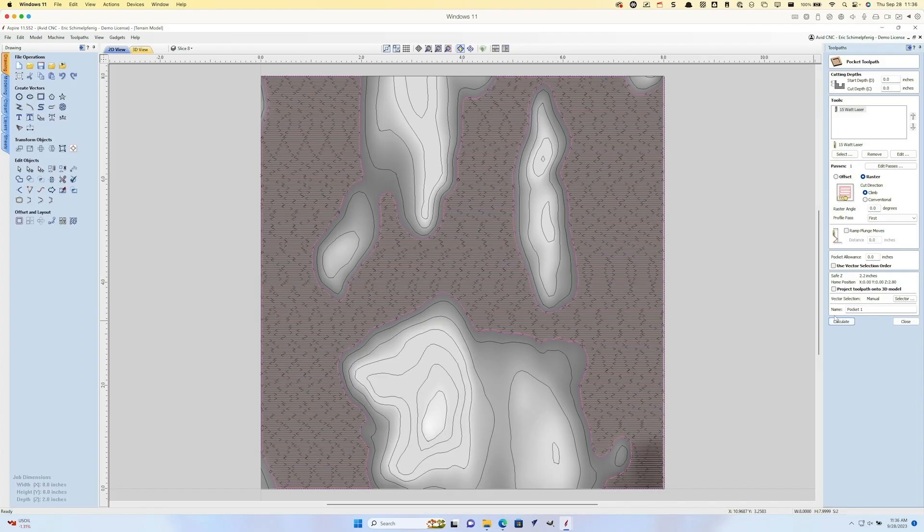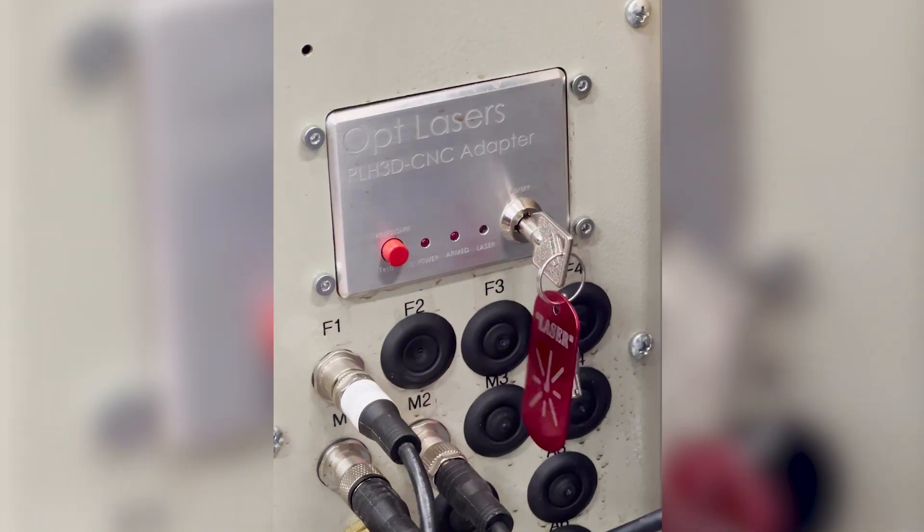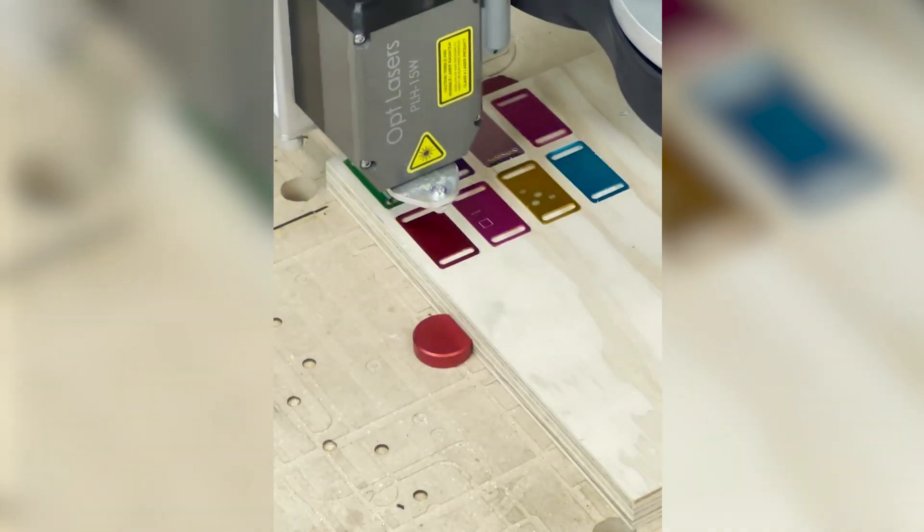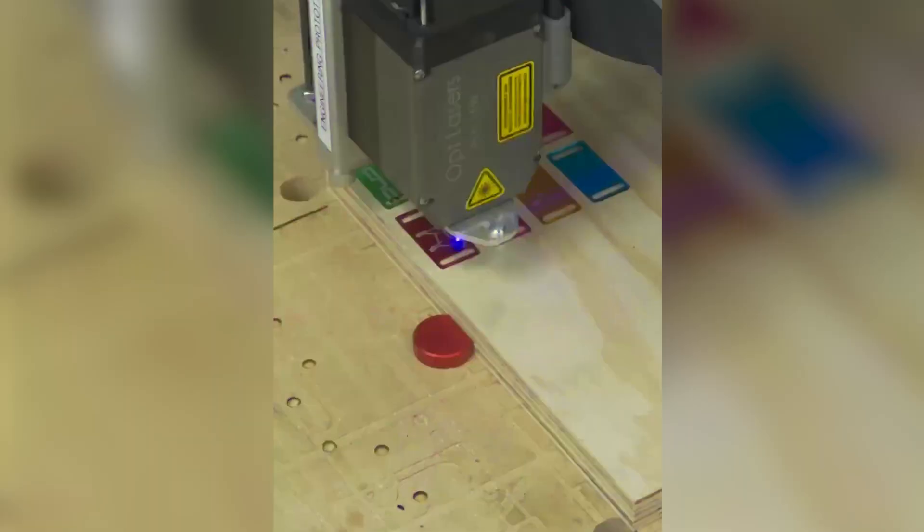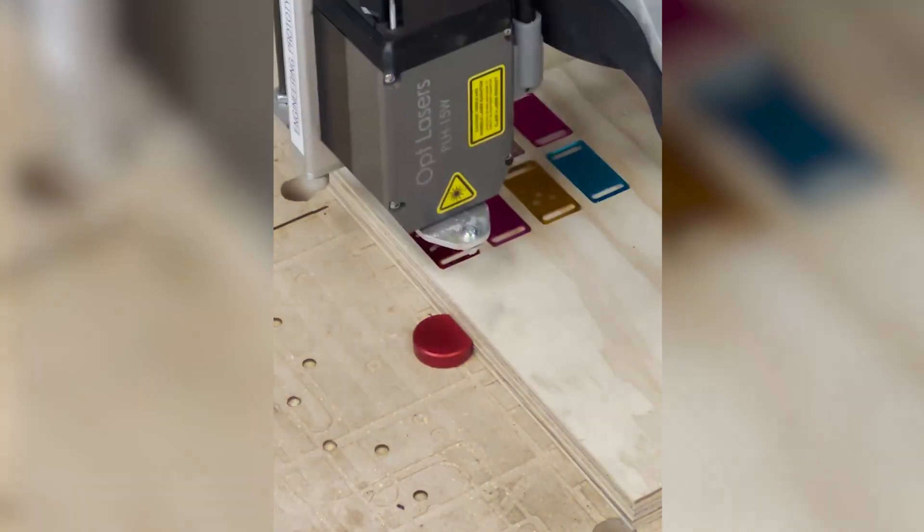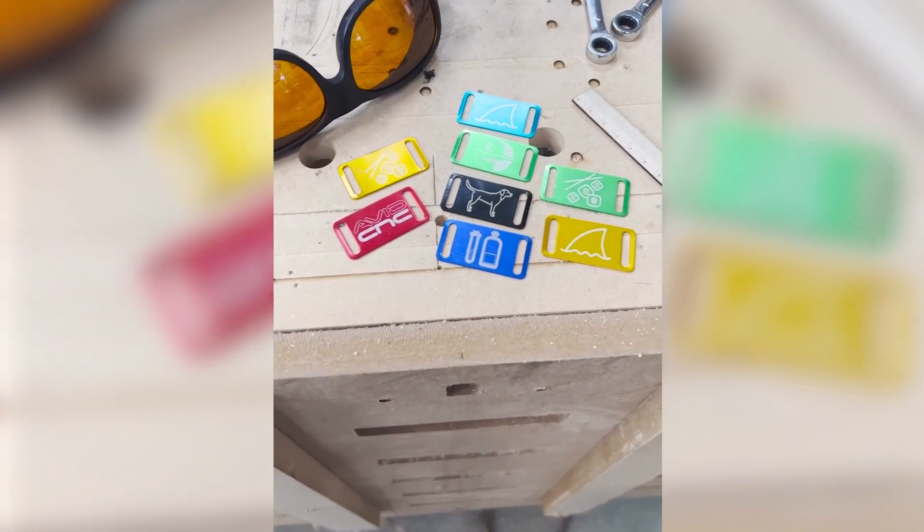The second part is the software. We figured out a way to make it so that you can use any CAM software to create tool paths for the laser. So now you don't need to buy another piece of software or use something proprietary that's hard to use. You can use the stuff that you already know how to use every day with your CNC machine to easily create tool paths for this laser system.